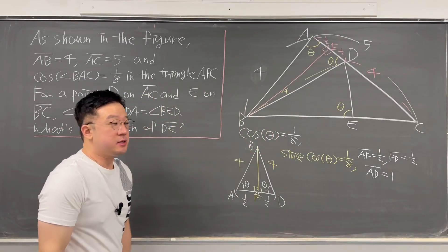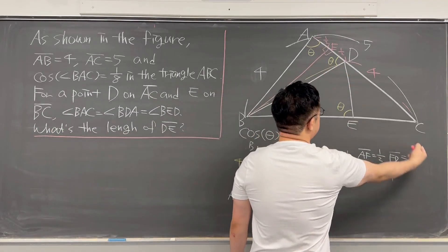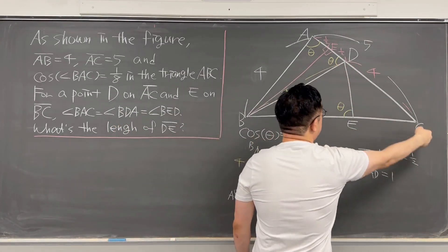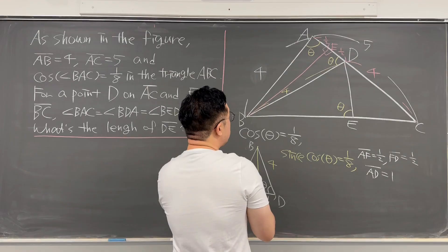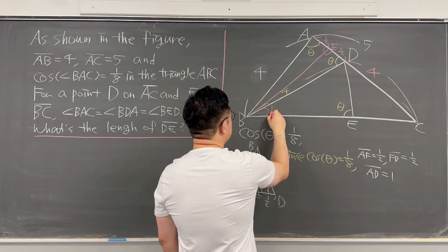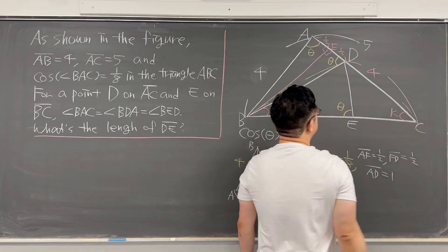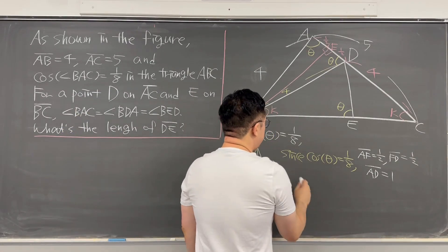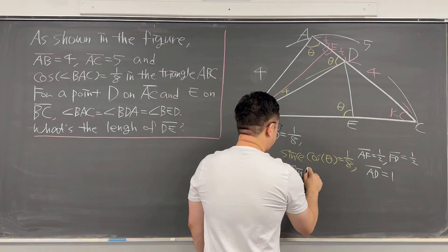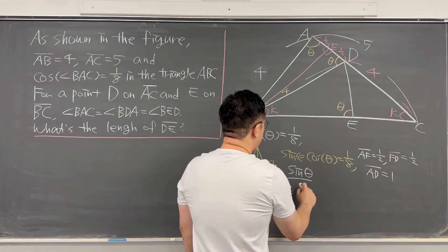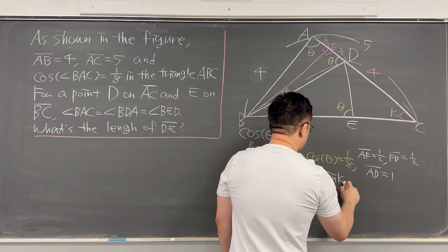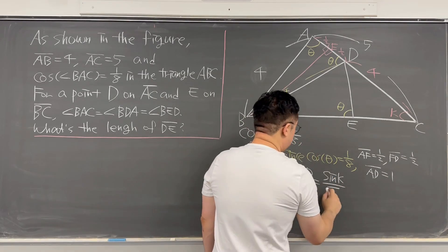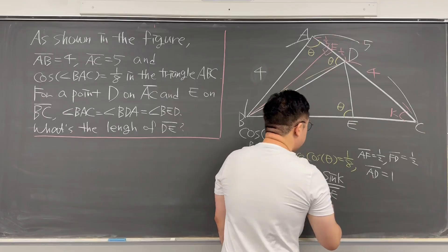This gives us another isosceles triangle, BDC. Since we confirmed that triangle BDC is isosceles, the base angles are the same — let me call this angle K. Then we can set up the Law of Sines: sine of theta over 4 equals sine of angle K over line segment DE, which is what we are looking for.